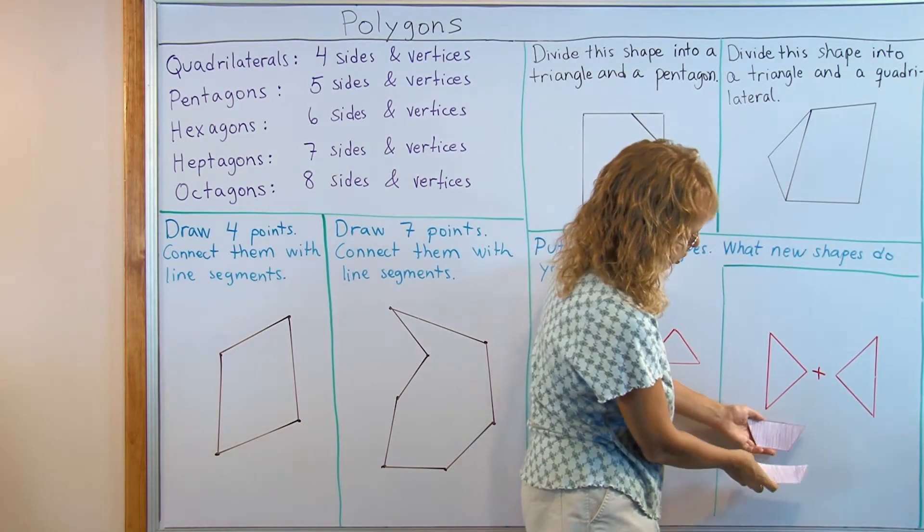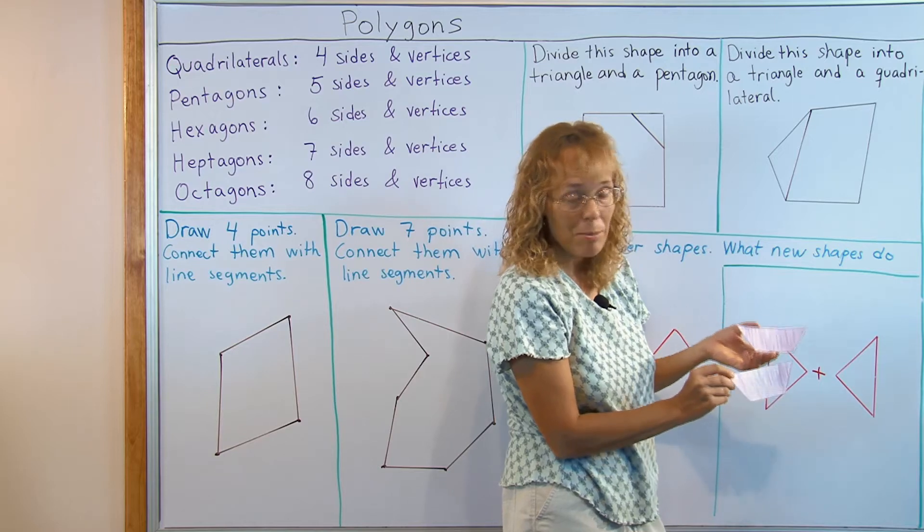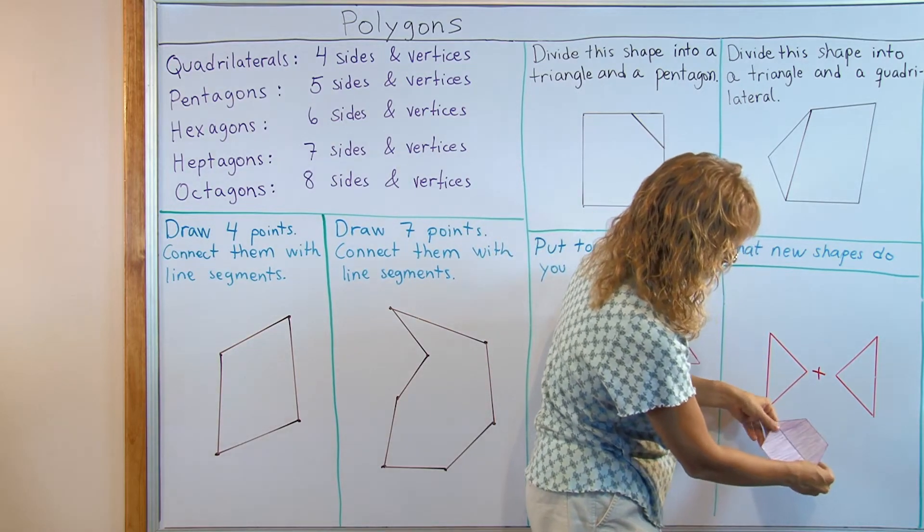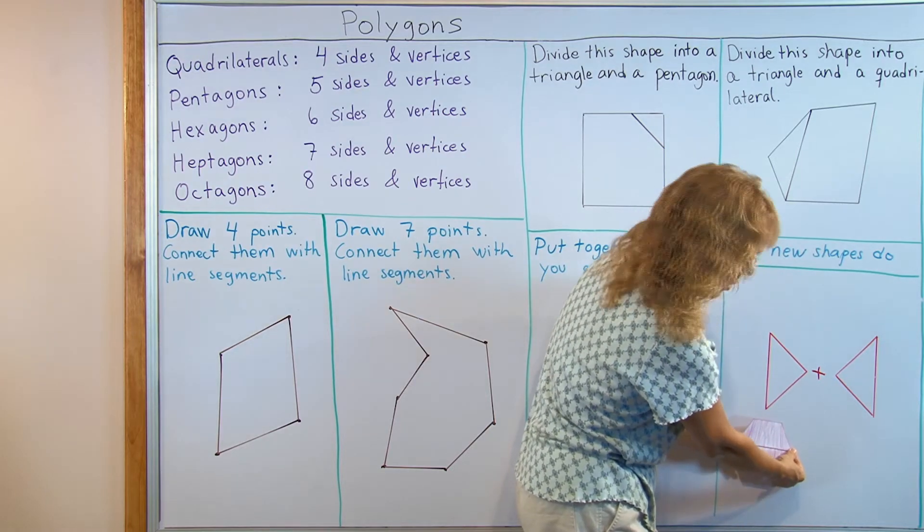Here I have two identical quadrilaterals, actually two congruent trapezoids. And again I can put them together in various ways like for example here I would get the hexagon.